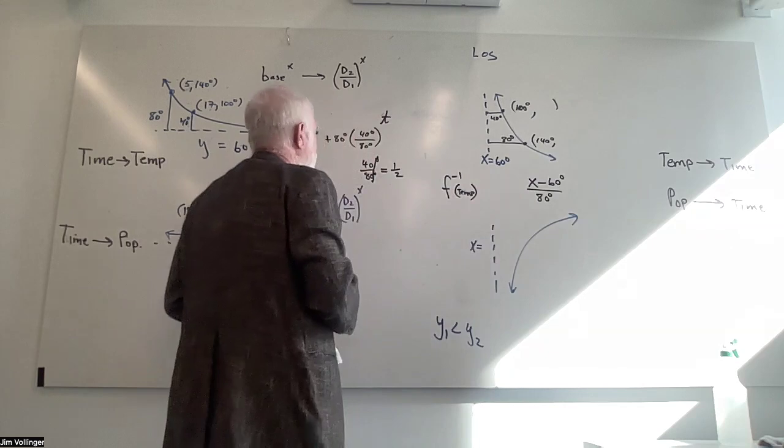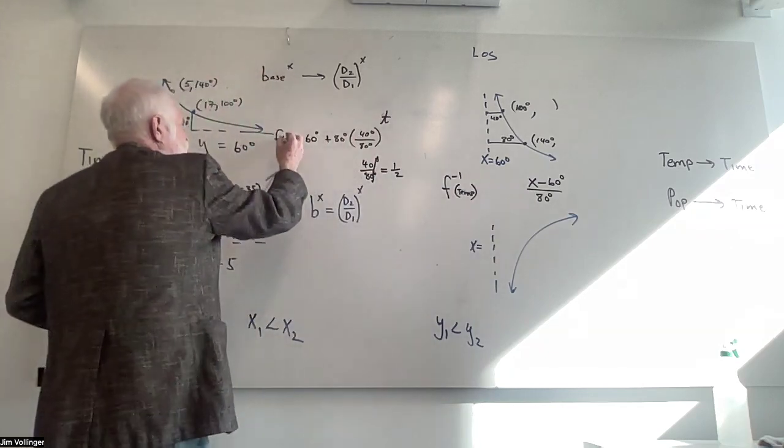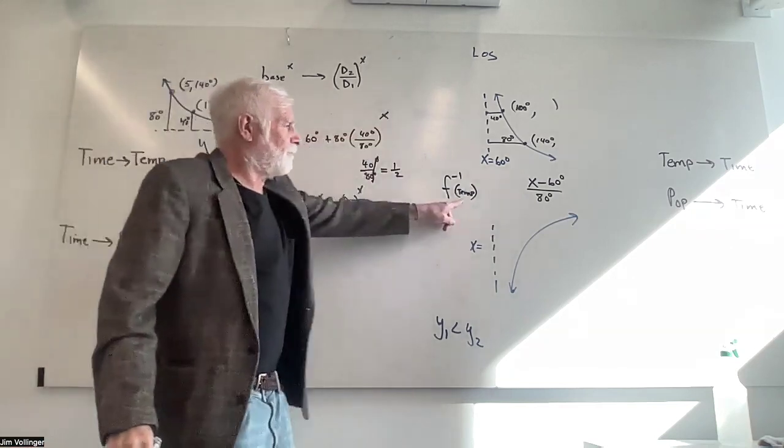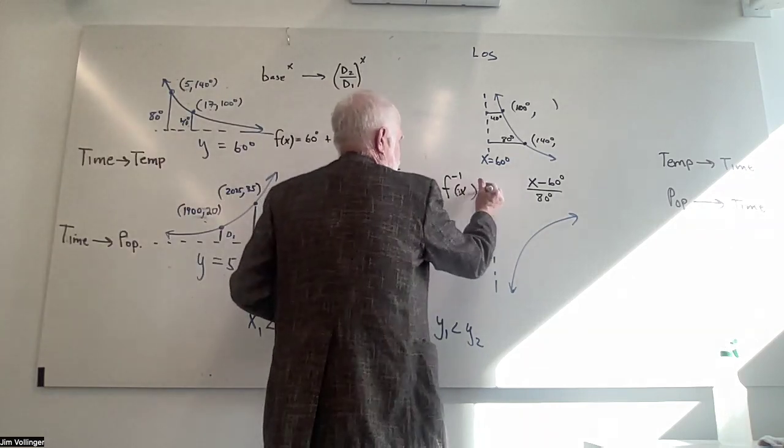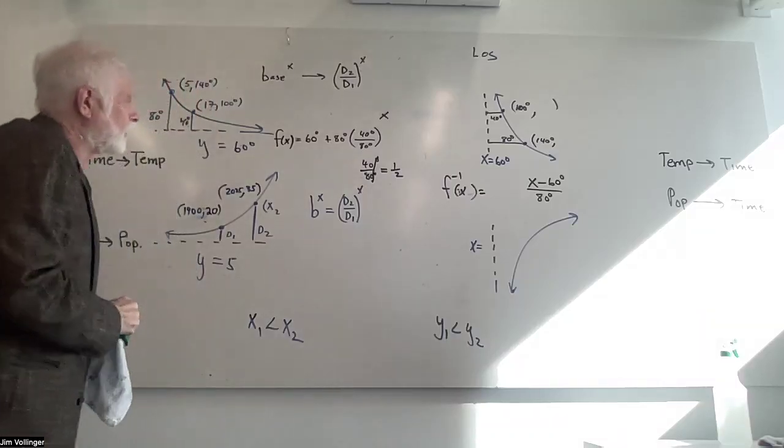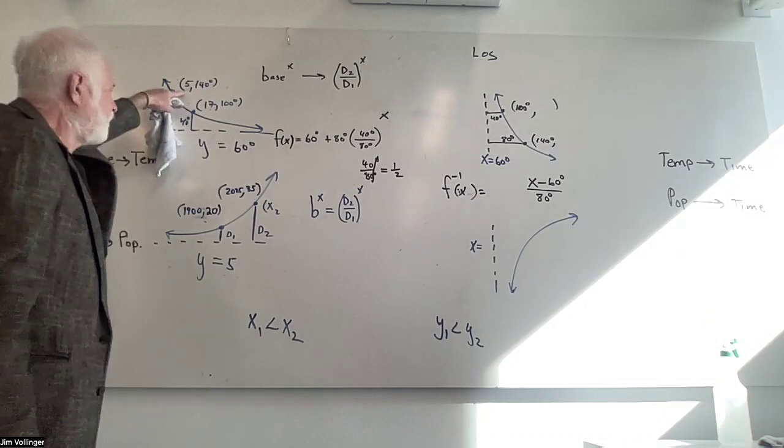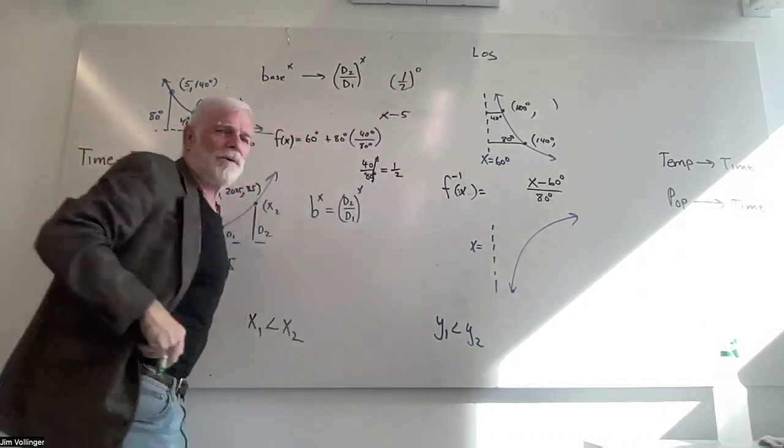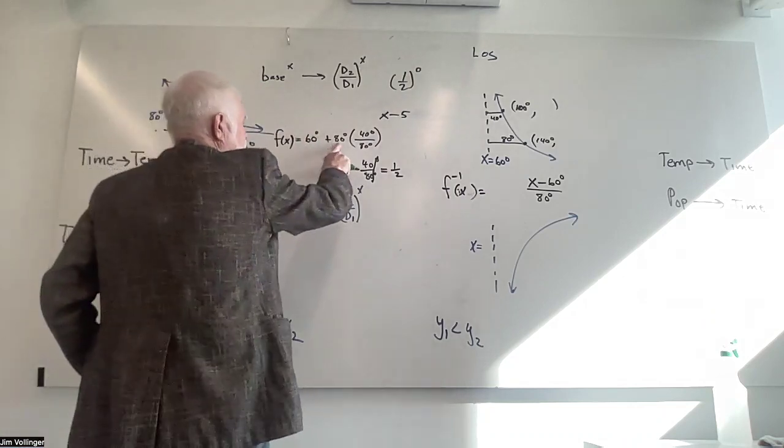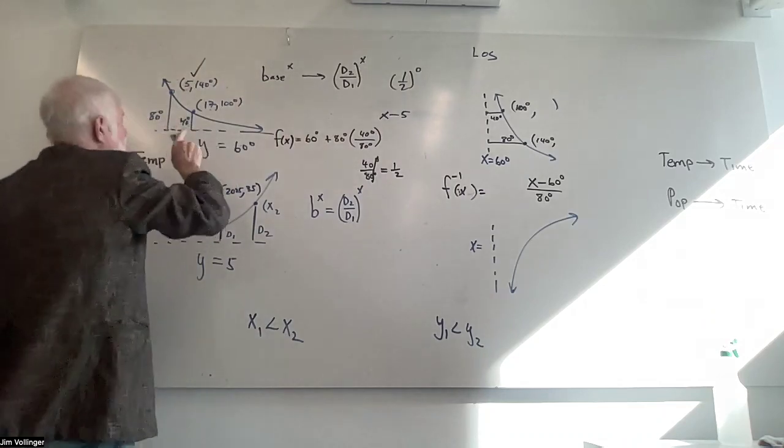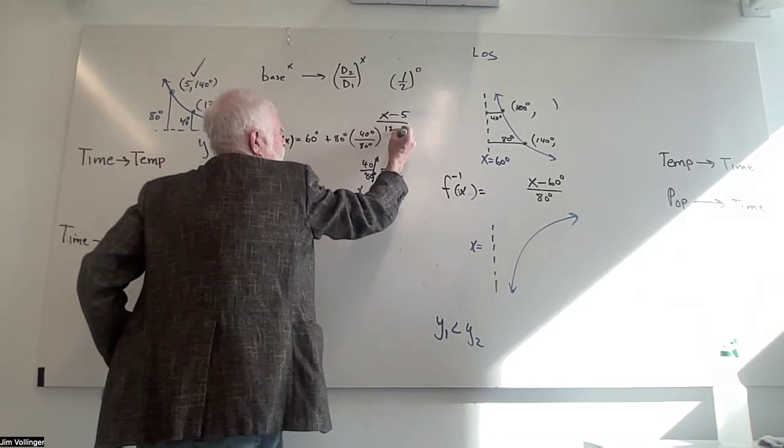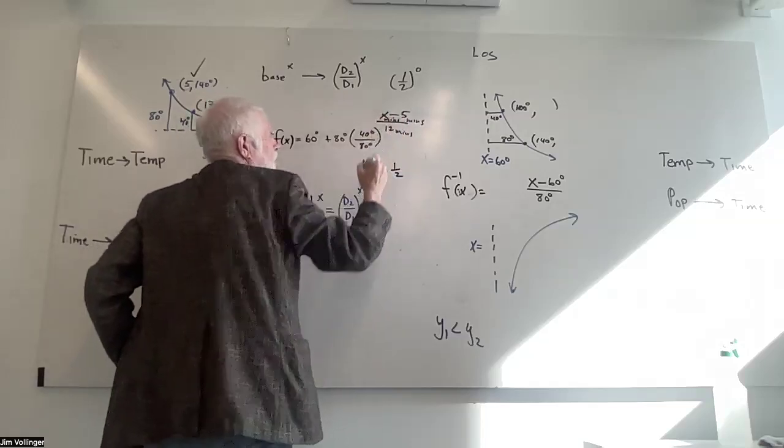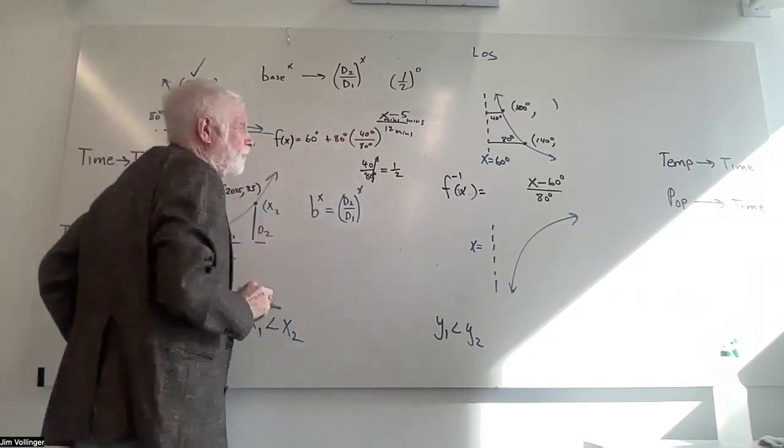Let's do the same thing over here. x minus 60 degrees is going to be part of that calculation. That 80 degrees is going to show up right here. Let's use t and change y to f of t. Over here the input is time, whereas the input here is temperature.